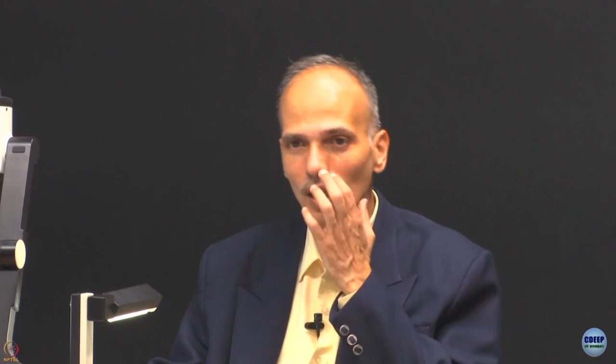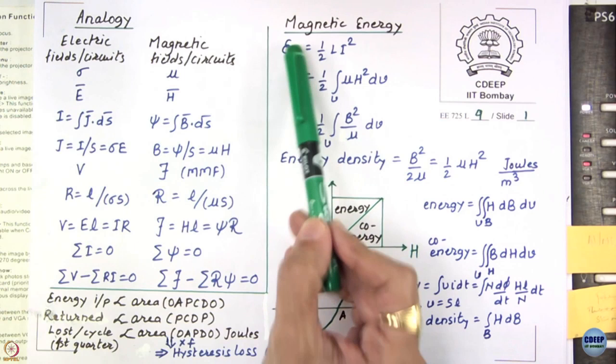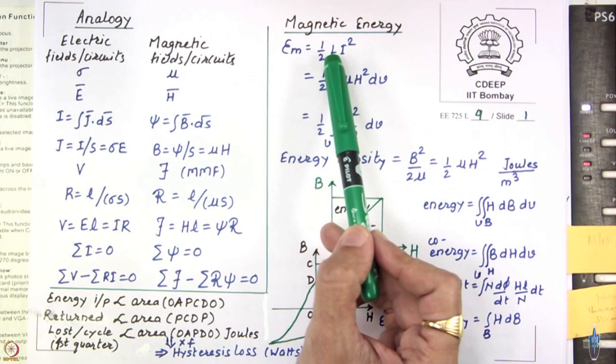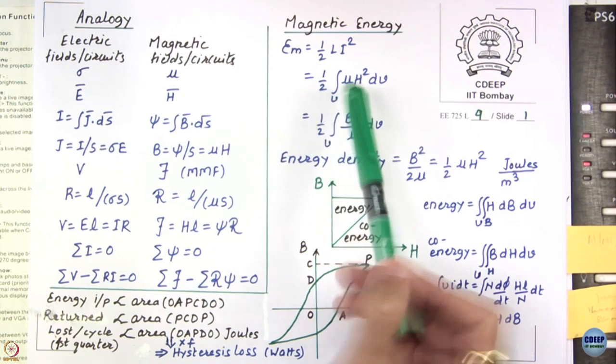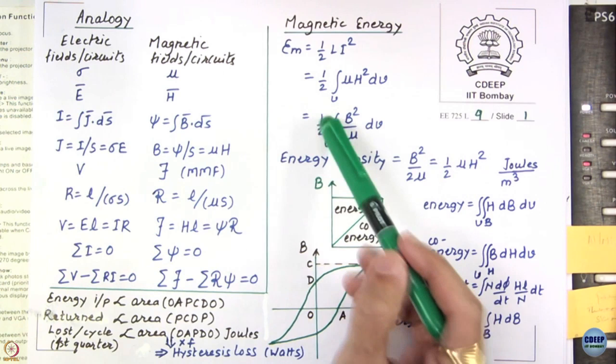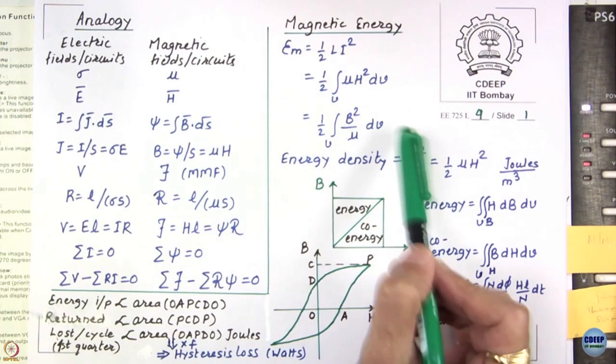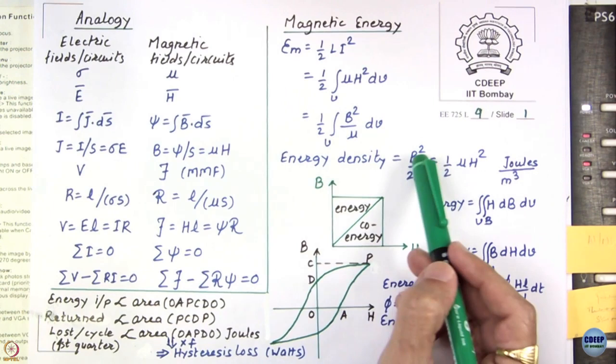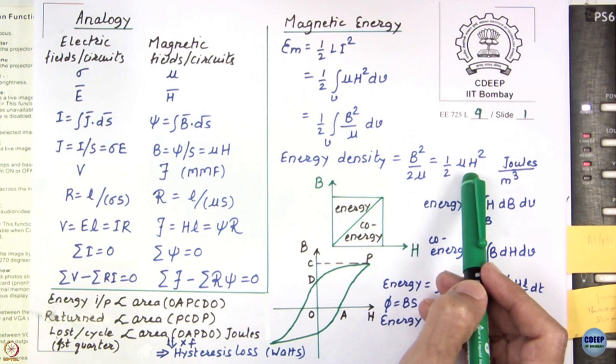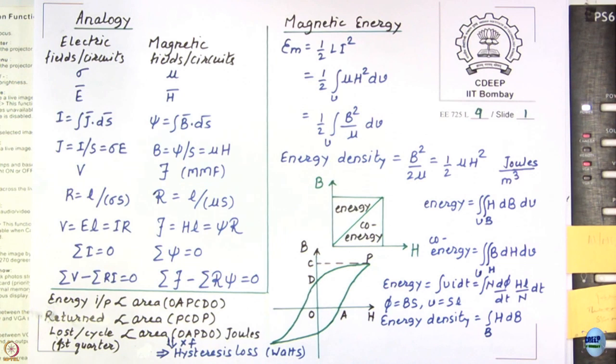Now we go to magnetic energy. We will cover magnetic energy for at least two lectures, and also discuss coenergy later when calculating forces. Magnetic energy is (1/2)LI², which equals (1/2)∫μH² dV or (1/2)∫B²/μ dV over the volume. Energy density is B²/(2μ) = (1/2)μH², with units of joules per cubic meter.